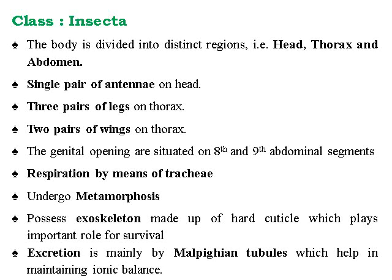The important class Insecta — the body is divided into three distinct regions: head, thorax, and abdomen. There is a single pair of antennae on the head, three pairs of legs on the thorax, and two pairs of wings on the thorax. The genital opening is situated on the eighth and ninth abdominal segments. Respiration is by means of the trachea, and insects undergo metamorphosis — developmental changes in structure. They possess an exoskeleton made of hard cuticle containing chitin, a proteinous material which gives flexibility. Excretion is mainly by Malpighian tubules, which help in maintaining ionic balance.